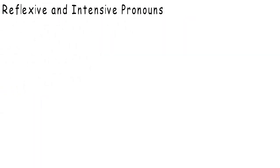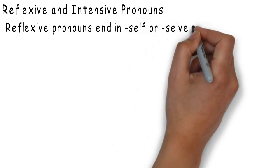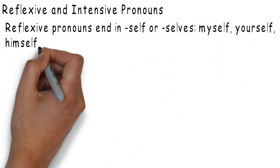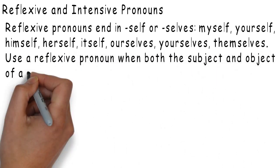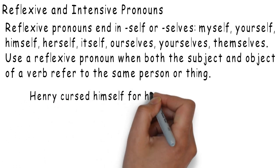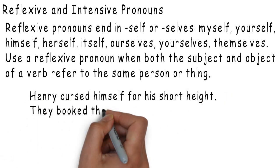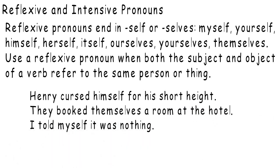Reflexive and intensive pronouns. Reflexive pronouns end in -self or -selves: myself, yourself, himself, herself, itself, ourself, yourself, themselves. Use a reflexive pronoun when both the subject and object of a verb refer to the same person or thing. For example: 'Henry cursed himself for his short height.' 'They booked themselves a room at the hotel.' 'I told myself it was nothing.'